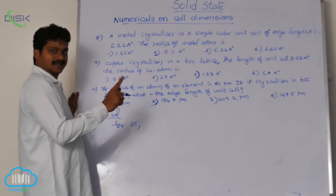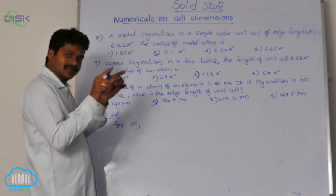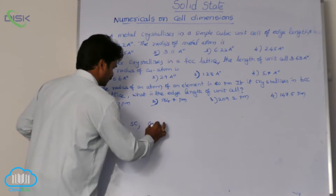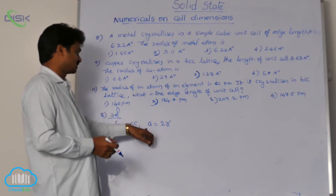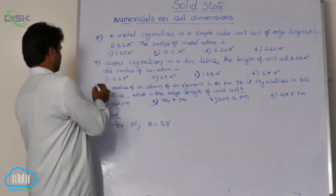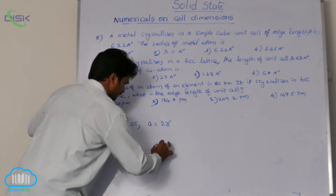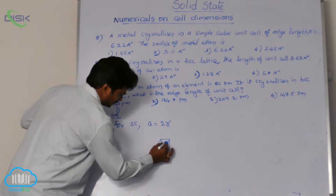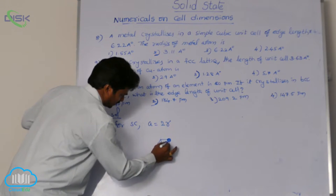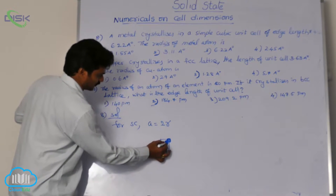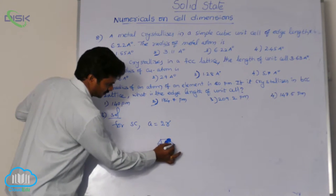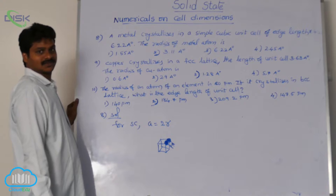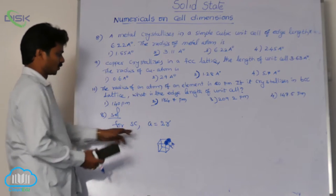In a simple cube, atoms are at the corners, so two corner atoms are in touch with each other. From the center of one corner atom to the center of the adjacent corner atom, the distance is the edge length A. Since each contributes a radius R, the total is R + R = 2R. Therefore, edge length A is equal to 2R.